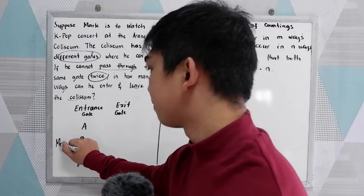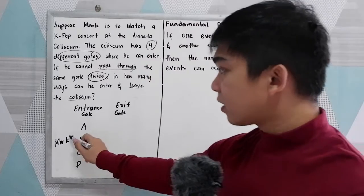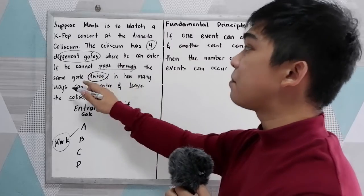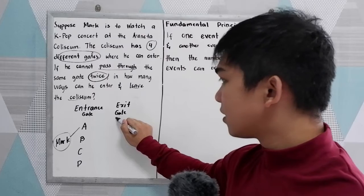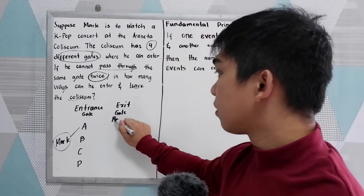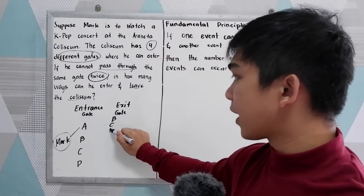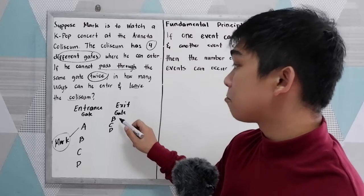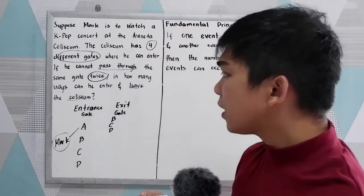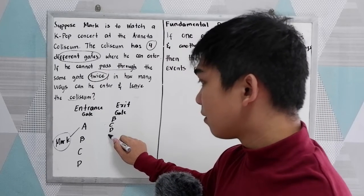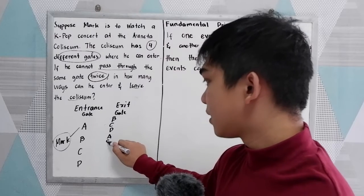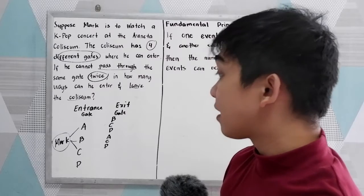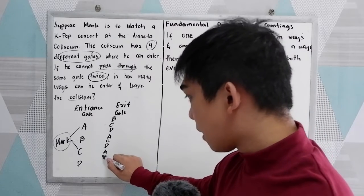If Mark enters at gate A, he cannot pass through the same gate twice, so his exit can be gate B, gate C, or gate D. If he enters at gate B, the possible exits are A, C, or D. And if Mark enters at gate C, the possible exits are A, B, or D.